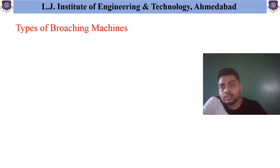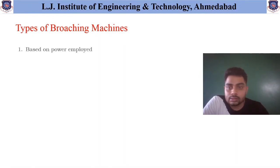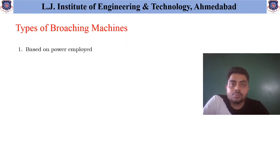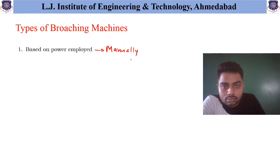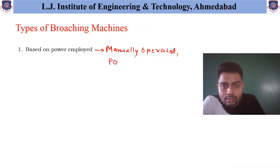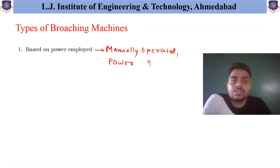The first type of classification of broaching machine is based on the power employed. That means how this broaching machine is operated. Based on this, the broaching machines are divided — it may be a manually operated or it may be power operated.